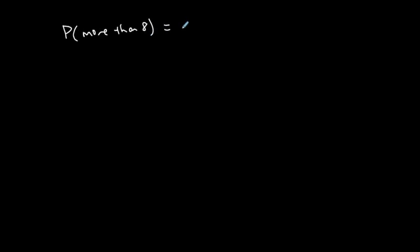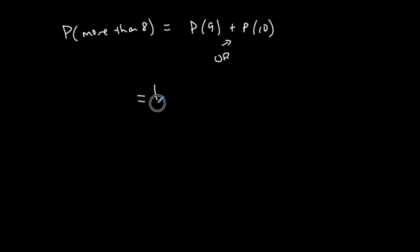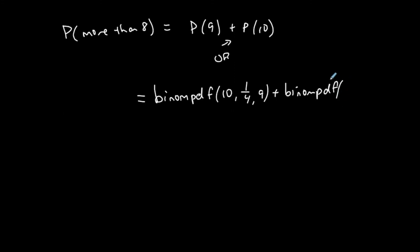Now let's find the probability of getting more than eight correct. More than eight out of ten means nine or ten correct. Since 'or' means addition, we calculate P(9) plus P(10). That requires running binompdf twice: binompdf(10, 1/4, 9) plus binompdf(10, 1/4, 10). Using the formula would require applying it twice as well, which is why the calculator is much faster.